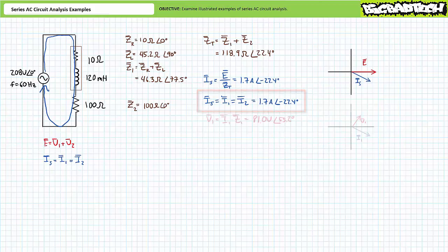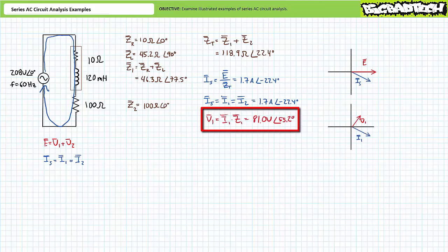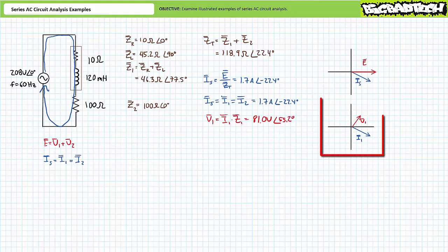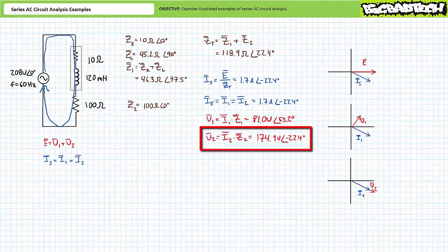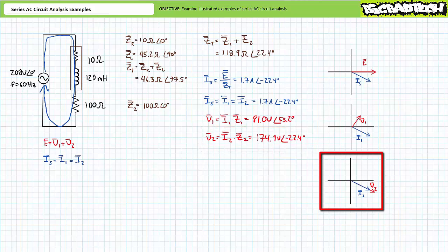Current through elements in series is the same. Application of Ohm's law solving for V1 demonstrates that voltage across primarily inductive impedance Z1 will be approximately 81 volts at an angle of 55.2 degrees. The phasor diagram for Z1 illustrates that current appears to lag voltage by a relative 55.2 plus 22.4, or a relative 77.5 degree phase shift. A purely inductive element would experience a full 90 degree phase shift. Application of Ohm's law solving for V2 demonstrates that voltage across resistive impedance Z2 will be approximately 174.9 volts at an angle of negative 22.4 degrees. The phasor diagram for Z2 illustrates that current and voltage appear to be in phase with one another.